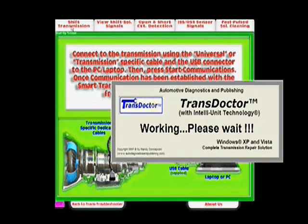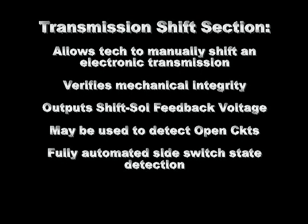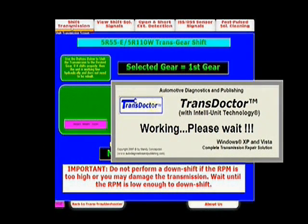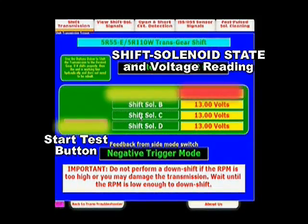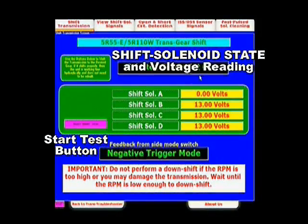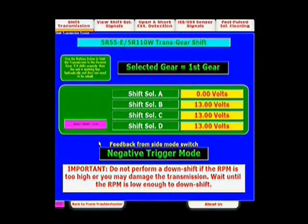The first section is the manual transmission shift section, which allows manual shifting of any electronic transmission. This section is used to verify mechanical integrity — if the transmission shifts manually, there's nothing wrong with its internal components. You'll also see an output voltage feedback which may be used to detect open circuits. The position of the switch is also monitored, and the unit will ask you to flip a switch if needed to control whether the unit is in ground or power control output.